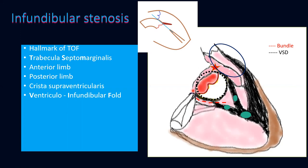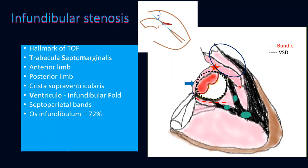This muscle forms the superior and anterior relationship of the VSD. There are also septoparietal bands which we divide during infundibular resection. An os-infundibulum is when the infundibular outflow is pinpoint, either due to fibrous or muscular narrowing, and is seen in 72% of cases. When an infundibular stenosis or os-infundibulum is formed, the RV outflow distal to it sometimes forms a chamber or a 'third ventricle' of sorts.